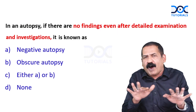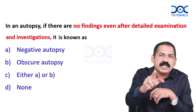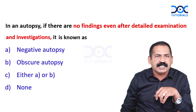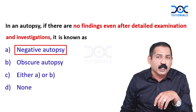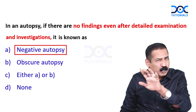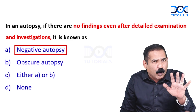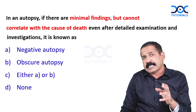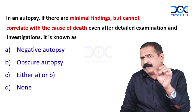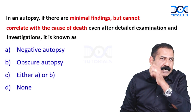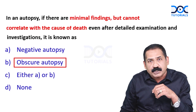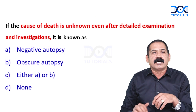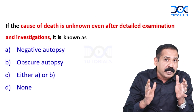In an autopsy, if there are no findings at all even after detailed examination and investigation, it is known as negative autopsy. In an autopsy, if there are minimal findings but they cannot be correlated with the cause of death, the answer is obscure autopsy.